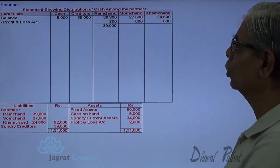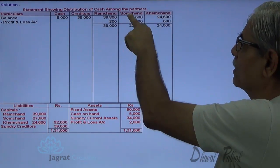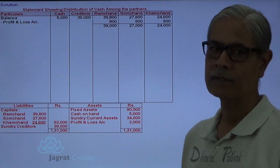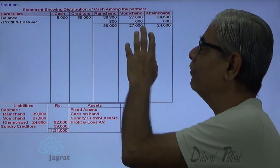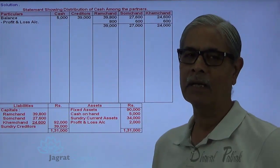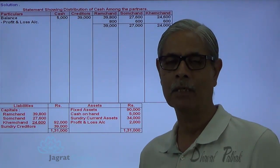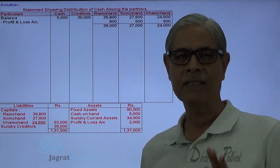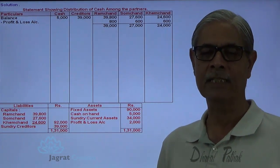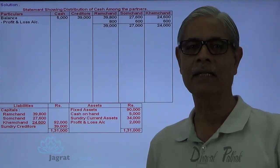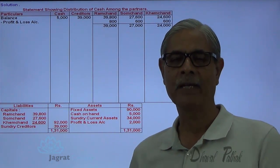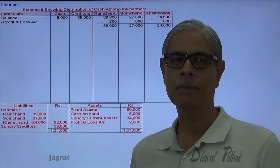So the amount payable to Ramchand is 39,000, Somchand 27,000, and Khemchand 24,000. After finding the exact net amount payable to the partners for their capital — considering accumulated profits and losses not distributed till the date of dissolution — those are required to be distributed first, and then you can proceed with the piecemeal distribution. Creditors are required to be paid in priority to the payment of capital.